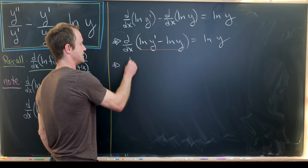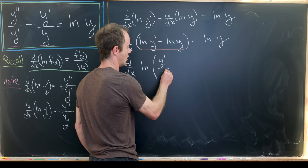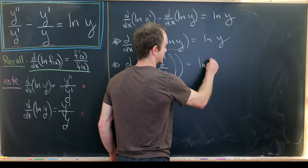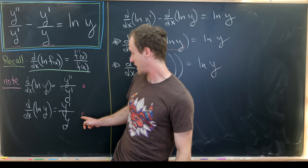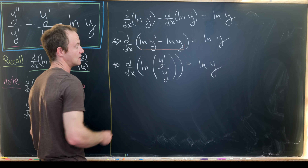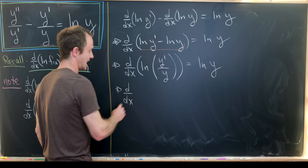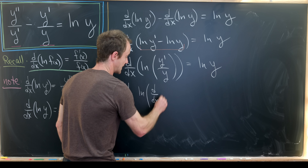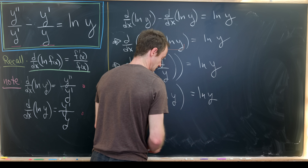Using logarithm rules, we get d/dx [ln(y' / y)] = ln(y). But now we'll use essentially the same logarithmic derivative identity, just embedded inside this logarithm. That gives us d/dx [ln(d/dx [ln(y)])] = ln(y).